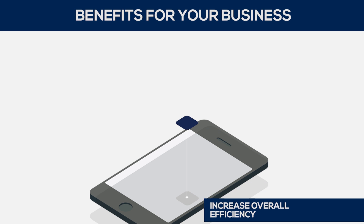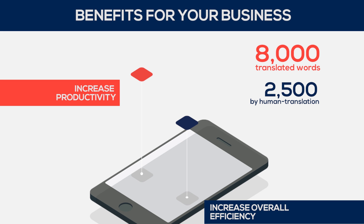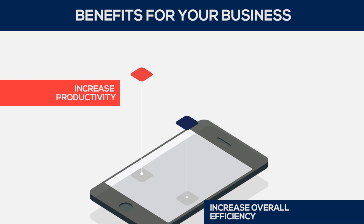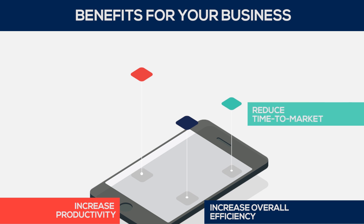Machine translation can increase your productivity by translating greater volumes of content. On average, machine translation produces 8,000 translated words per day including 8 hours of post-editor work, in comparison to 2,500 translated words with human translation. By translating more content at quicker rates, machine translation also helps reduce your time to market, allowing you to translate more words per day and deliver translated content to your customers faster.